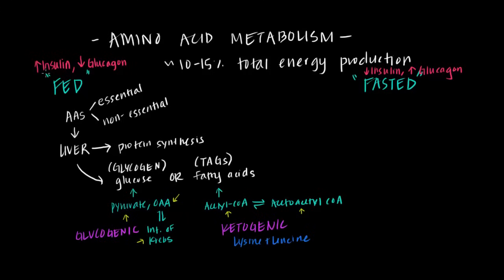Going back to the journey of our amino acids: they enter the liver, which can either use them for protein synthesis or convert them into other energy storage forms. But the liver can also send amino acids off to other tissues such as muscle, where they can be used for that tissue's own protein synthesis. So other cells throughout the body also receive amino acids they can use for protein synthesis.